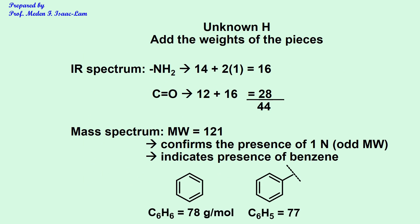To add the weights of the pieces: from the IR spectrum, we have NH2 — N is 14, plus 2 times H is 2, totaling 16. We also have C double bond O — carbon 12 plus oxygen 16 is 28. Total is 44. The molecular weight from mass spec is 121, which is odd, confirming the presence of one nitrogen, consistent with NH2 from the IR.